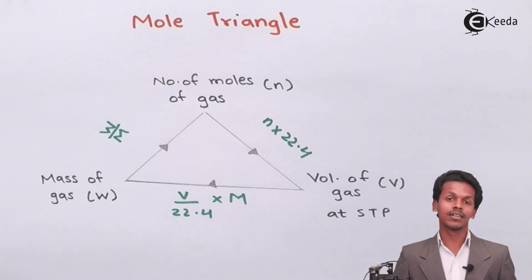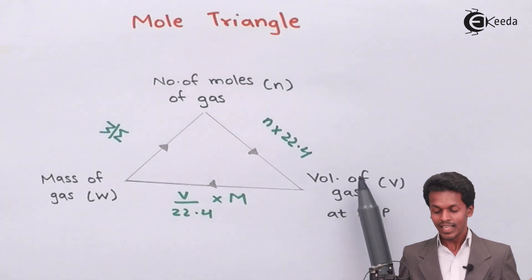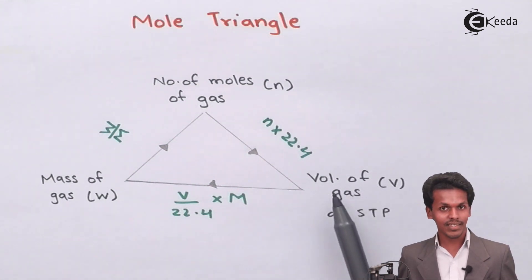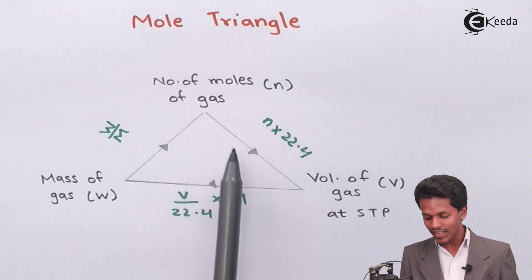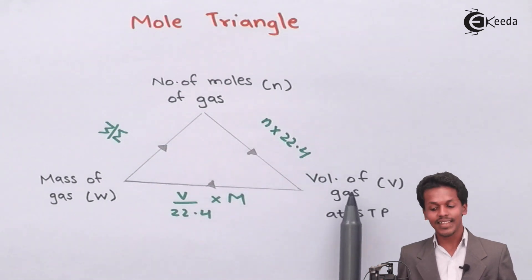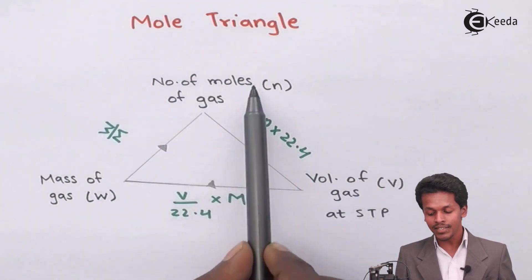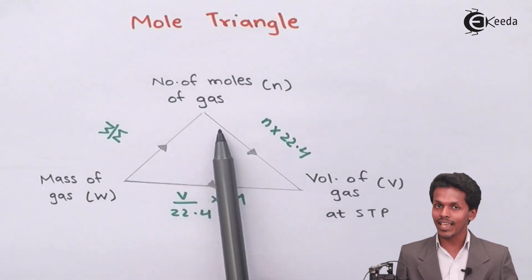Now, talking about the next term, how can we calculate the volume of the gas? This is the volume of the gas, and it is related to number of moles. As we can see, this arrow is pointing towards the volume of the gas. We have to take this term into account. Therefore, n in this case means the number of moles of the gas.